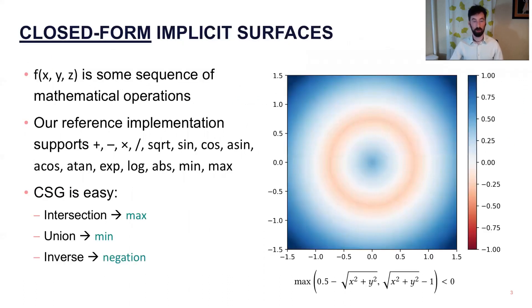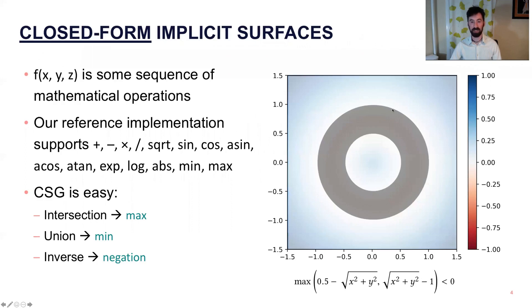When we say closed-form implicit surfaces here, I'm talking about these functions where you can represent them by a series of math operations. So addition, subtraction, transcendental functions, min, max, and so on. On the right we have an example where we have a ring, where everything that's red is negative, so it's inside. Everything that's blue is positive, so it's outside. And in this function, you should notice that we're doing CSG, constructive solid geometry, with a max operation. That'll be important later.